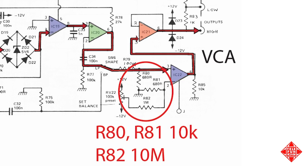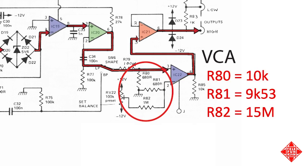R82 is of sufficiently high value not to have any appreciable effect on pin 2. Thanks, Tony. So with this feedback, I might suggest a more modern version of this modification would be to swap in a 10k resistor at R80, 9.53k at R81, and 15 meg at R82. But what will this accomplish?